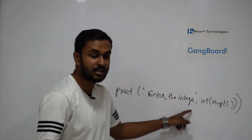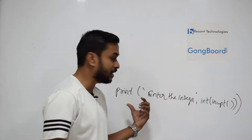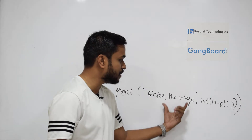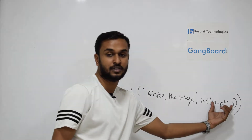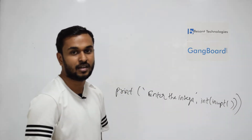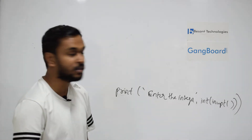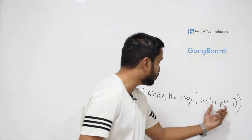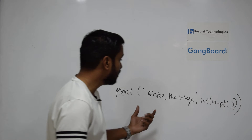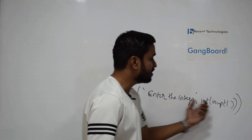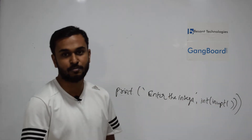We can print the integer automatically. We write print, then input — the user enters the integer. For example, entering 5 as input. So this is a simple statement in Python.